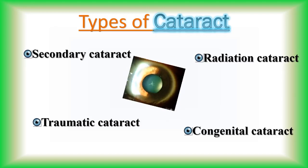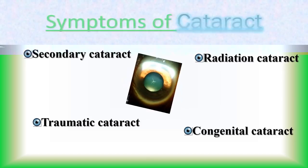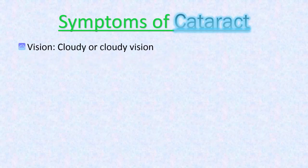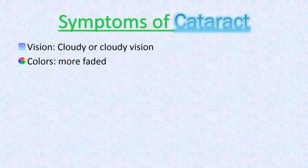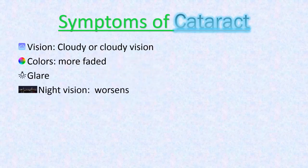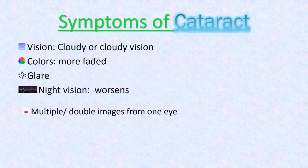The most common symptoms of a cataract are blurry or cloudy vision, colors that appear more faded, and headlights, lamps, or sunlight may appear too bright. A halo may appear around lights.